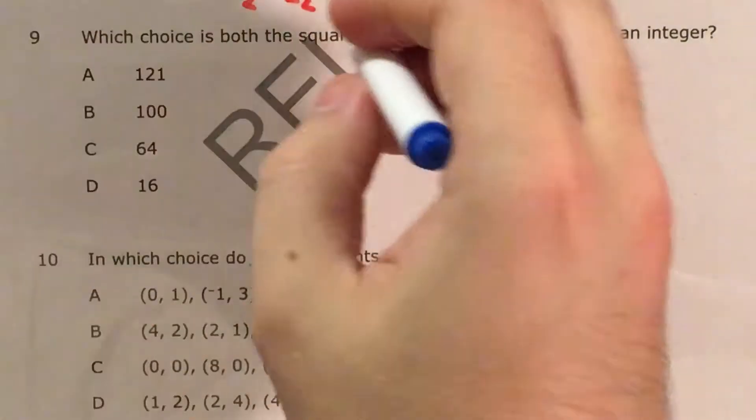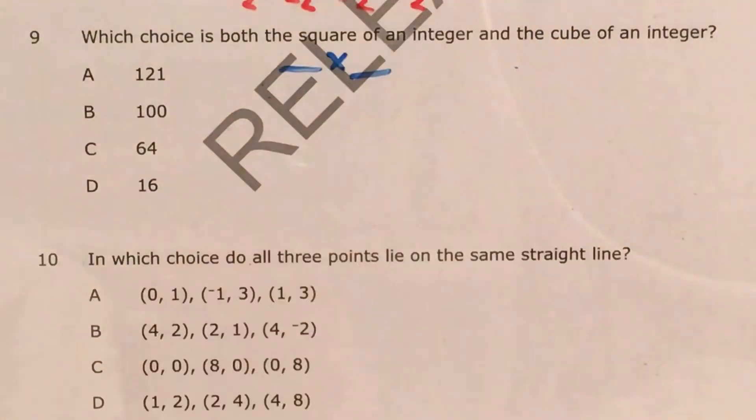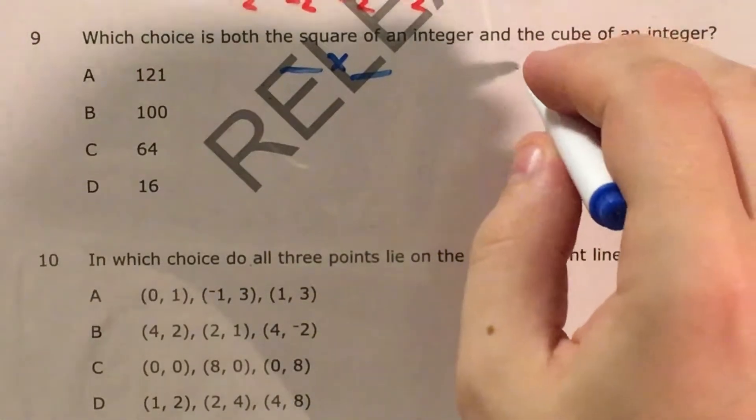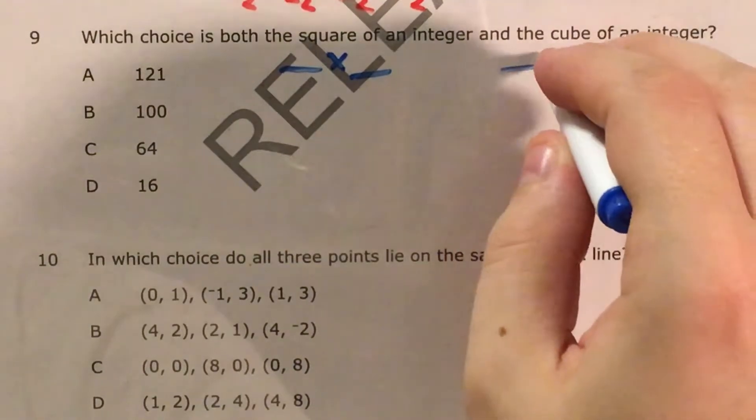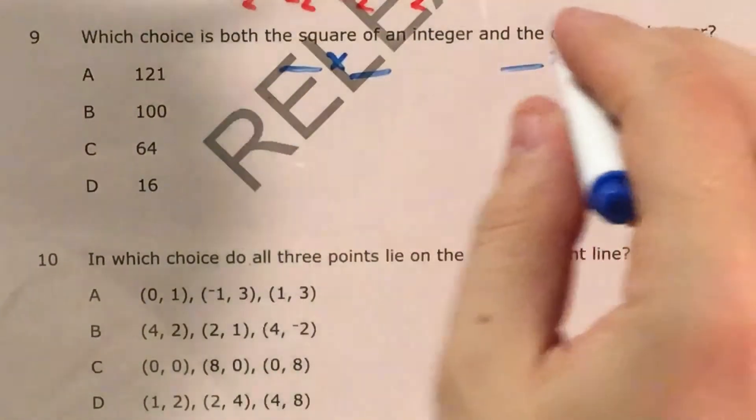The idea of a square number is that we take a number and multiply it by itself. So the same number would go in both of these blanks. The cube is a little trickier. We multiply the same thing by itself three times.